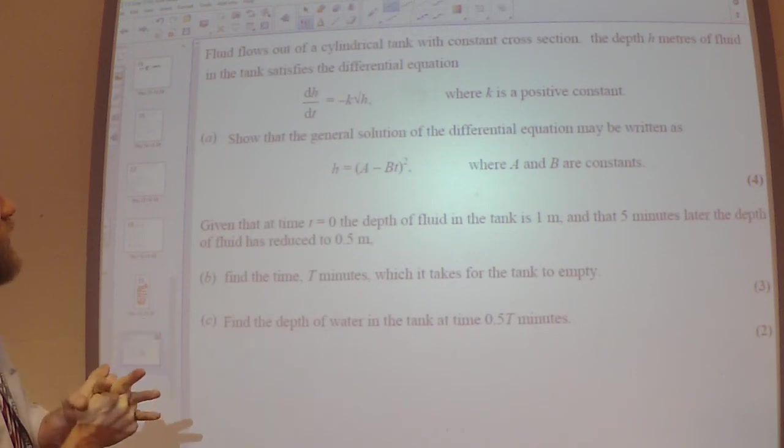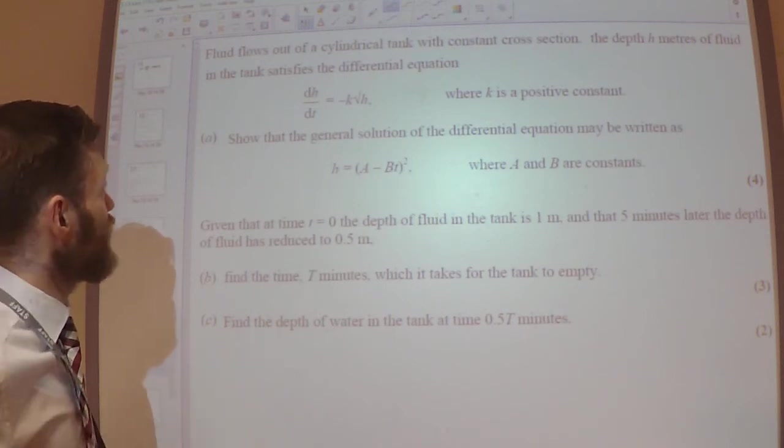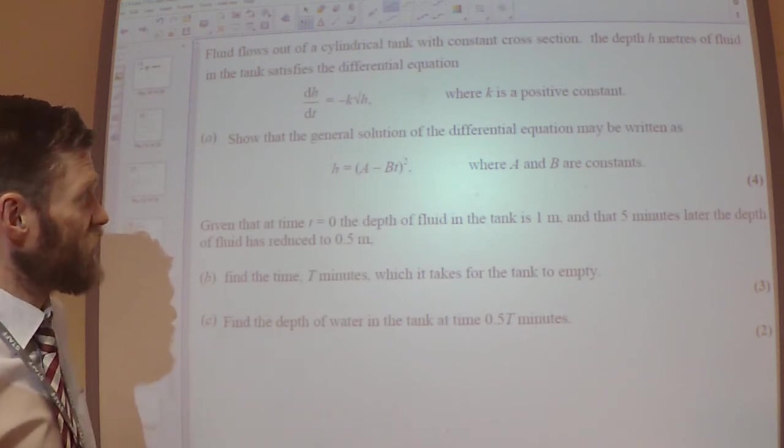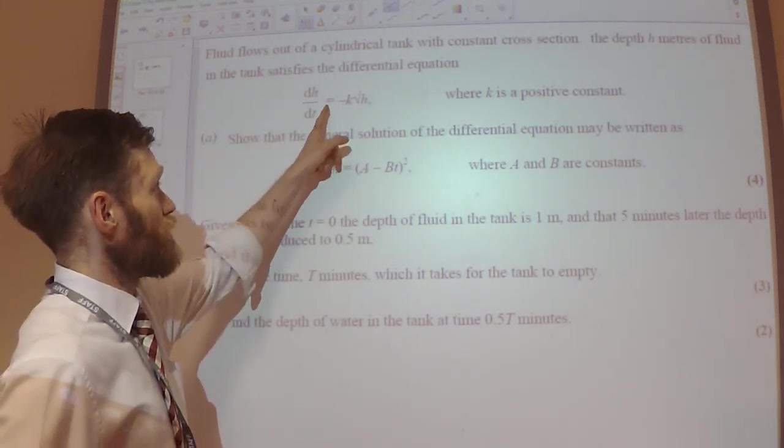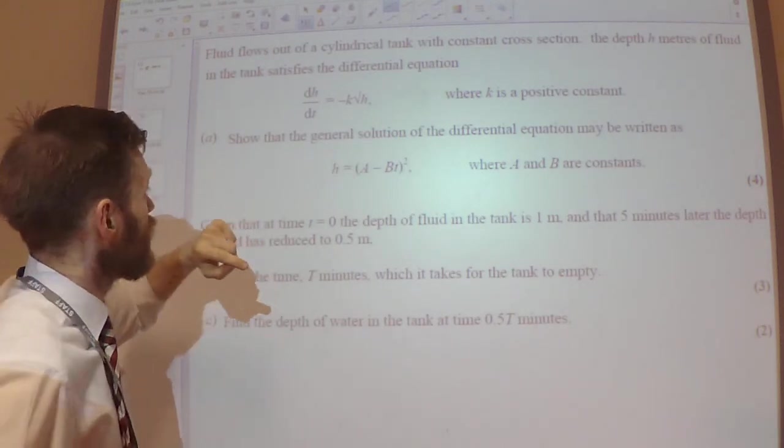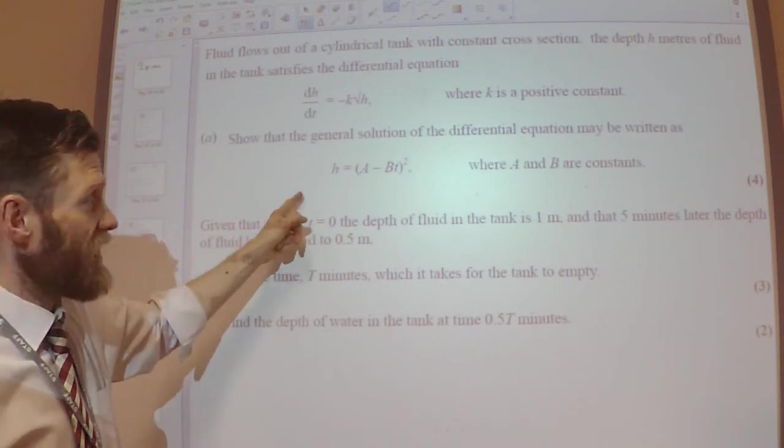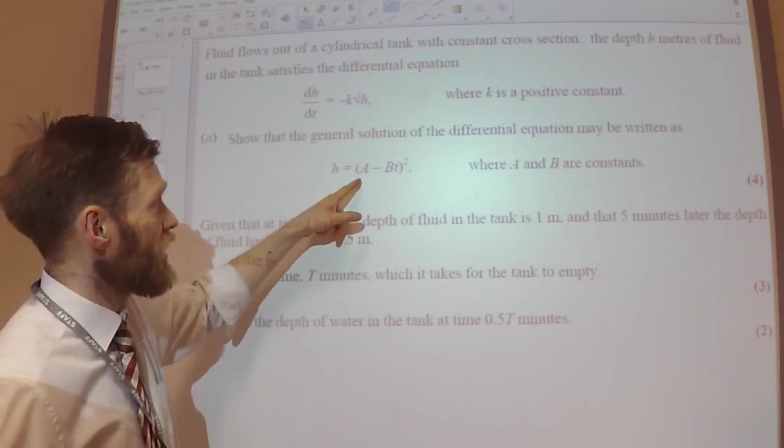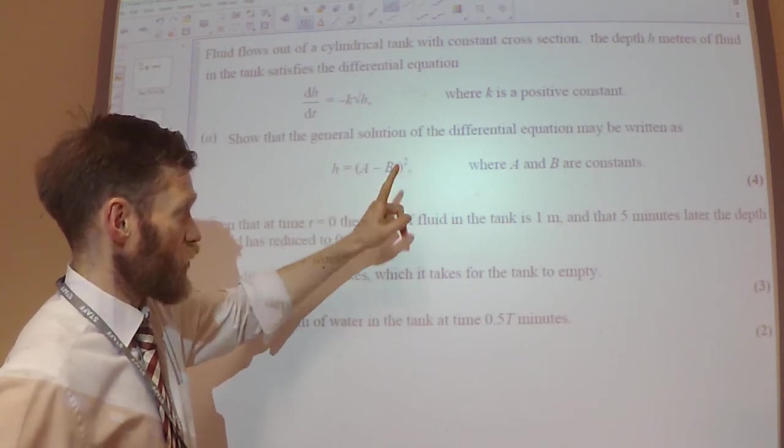It says, fluid is flowing out of a cylindrical tank of constant cross-section. The depth H meters of fluid in the tank satisfies this differential equation: DH by dt equals minus K root H.